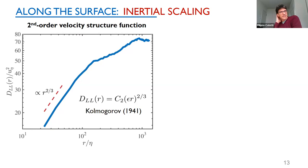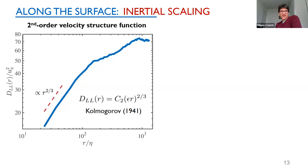The second-order velocity structure function on the free surface shows a clear two-thirds scaling with separation, just as Kolmogorov theory predicts for incompressible turbulence. If I choose the constant C₂ = 2.1 — as data indicates for three-dimensional incompressible turbulence — I can obtain an estimate of the dissipation rate by compensating the second-order structure function, and the plateau I get is very close to 10⁻⁴ m² s⁻³, consistent with multiple other estimates.